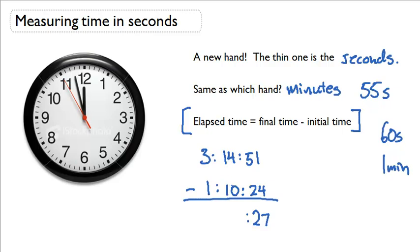And then 14 minutes minus 10 minutes, you get 4 minutes. And 3 hours minus 1 hour is 2 hours. And finally, our answer is clear as day. It is 2 hours and 4 minutes and 27 seconds.